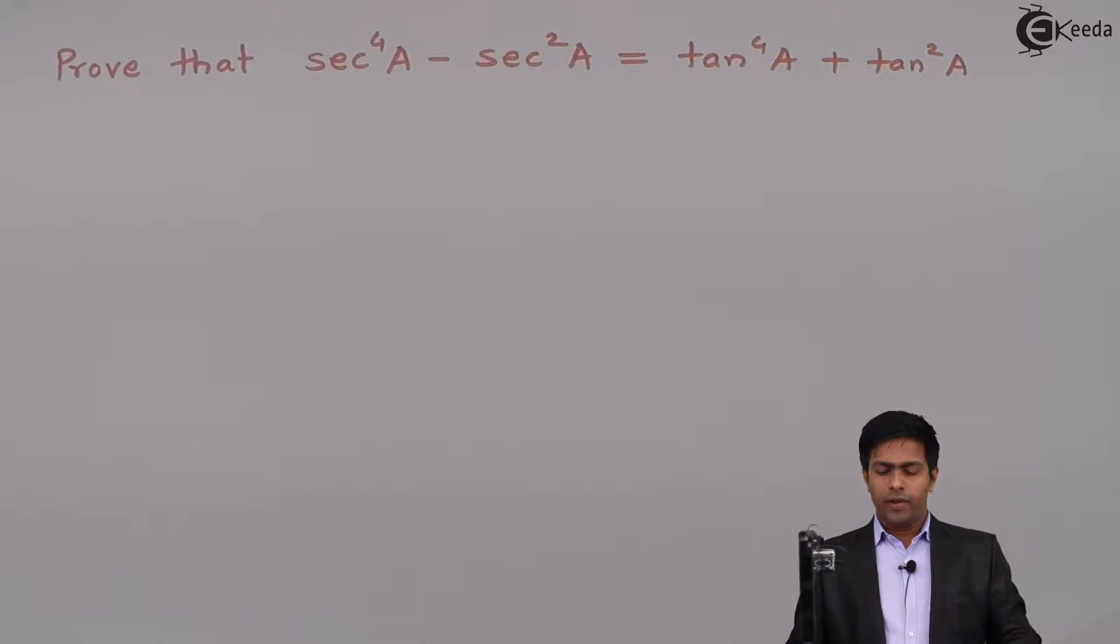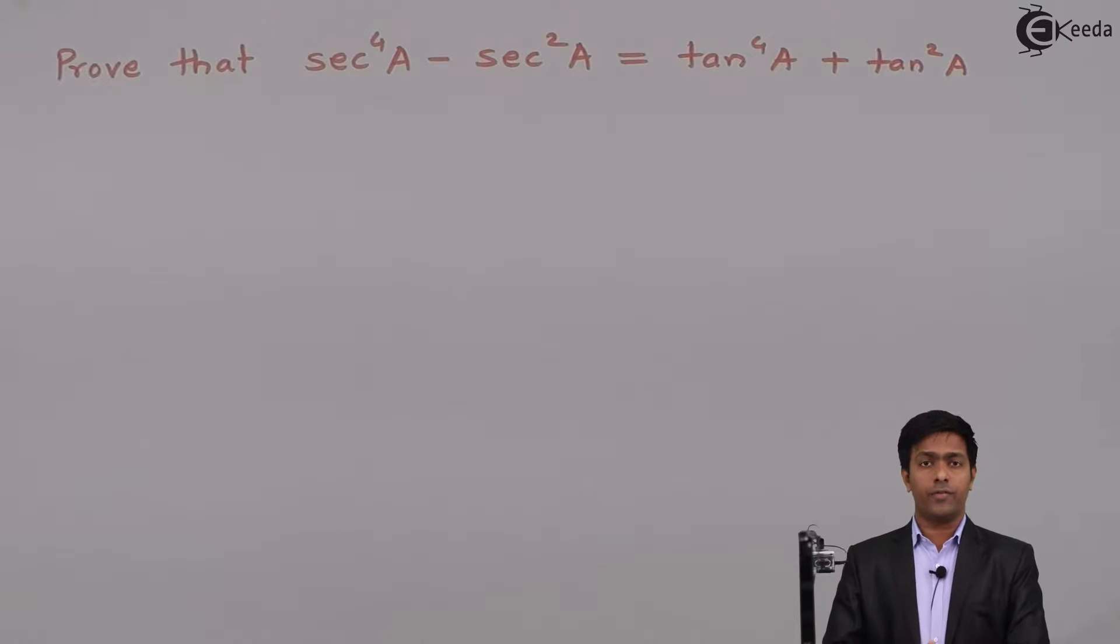Now if you will see the left hand side, then we have the trigonometric ratio as sec, and in sec we have two different powers, that is power 2 and power 4. Similarly on right hand side we have tan with power 2 and 4.